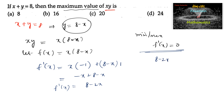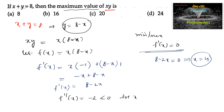For minima or maxima, f dash of x is equal to 0, that is 8 minus 2x is equal to 0, so x is equal to 4. Now to check whether x equal to 4 gives maximum or minimum, we double differentiate: f double dash of x is equal to minus 2, which is less than 0 — and f double dash of 4 is also equal to minus 2, a constant less than 0.